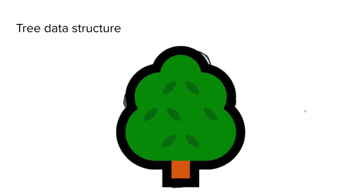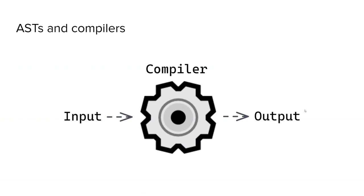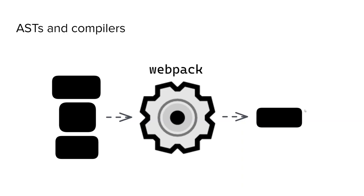There are also many different types of trees with different constraints. For example, a binary tree is a tree with at most two child nodes. For the purpose of working with ASTs, the important aspect is understanding how a tree can be used to represent data and the relationships between nodes. Some of the most prominent uses of ASTs are in compilers. A compiler accepts source code as input and then outputs another language — often from a high-level programming language to something low-level, like machine code. In the front-end web ecosystem, this includes tools like Webpack or Parcel.